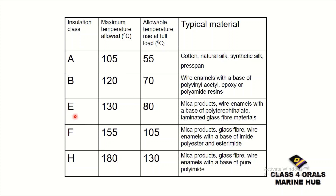Next, Class E insulation. The maximum temperature allowed is 130 degrees centigrade, and at full load the temperature rise is 80 degrees. Typical materials are mica products, wire enamels with a base of polyvinyl acetylate, and laminated glass fiber materials.